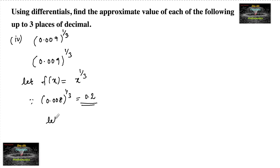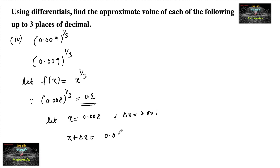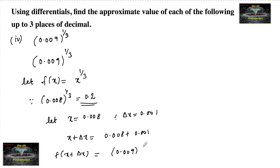Let x = 0.008 and δx = 0.001, so that x + δx = 0.008 + 0.001 = 0.009. Therefore f(x + δx) = (0.009)^(1/3), which is the value we want to approximate.